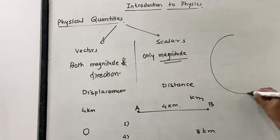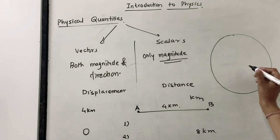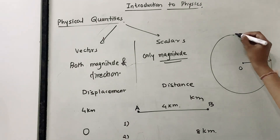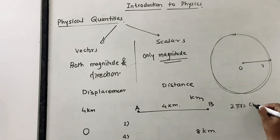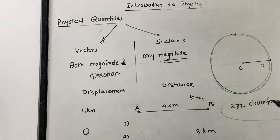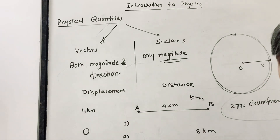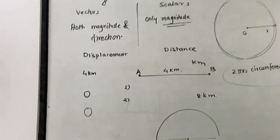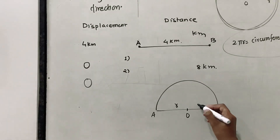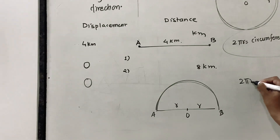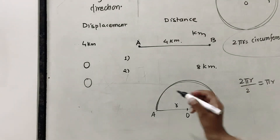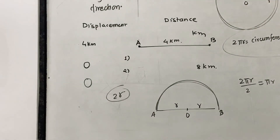Consider a body performing uniform circular motion. It starts from the origin and returns to the same point. The distance covered equals the circumference, which is 2πR, but displacement is 0 because the starting point and end point are the same. For a half circle with radius R, the distance covered is πR (half of 2πR), and the displacement is 2R — the straight line from start to end.